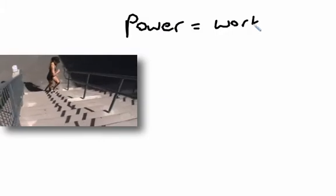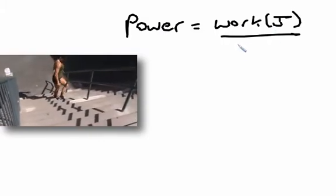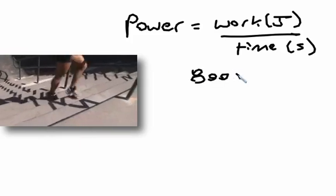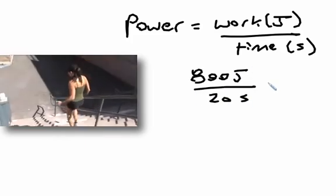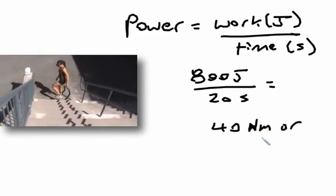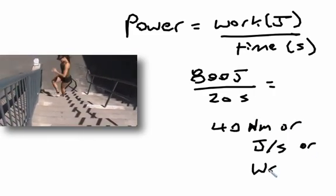Power is the work done divided by the time it took to do the work. So if you ran those stairs in 20 seconds then your power is calculated by dividing 800 by 20 which equals 40 newton meters or joules per second or watts.